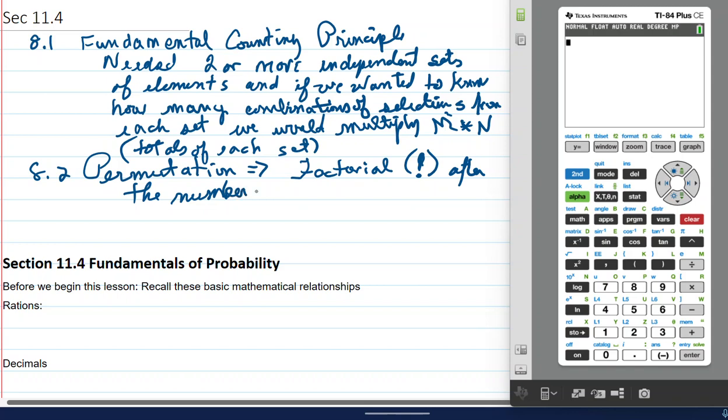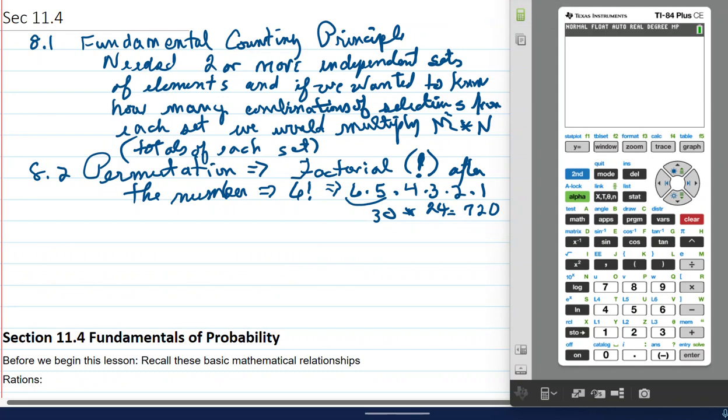And it meant that if we had an example, it would be 6 factorial. And that would mean 6 times 5 times 4 times 3 times 2 times 1. Then we would get our answer. And of course, we learned the calculator. I'm not going to go into the calculator. You look at your notes.